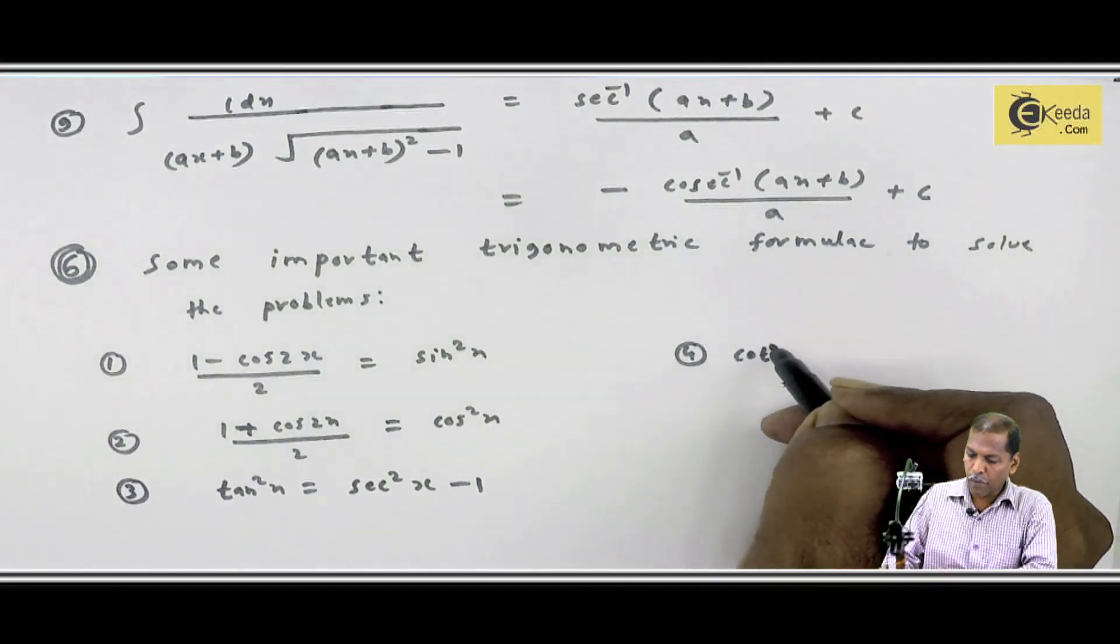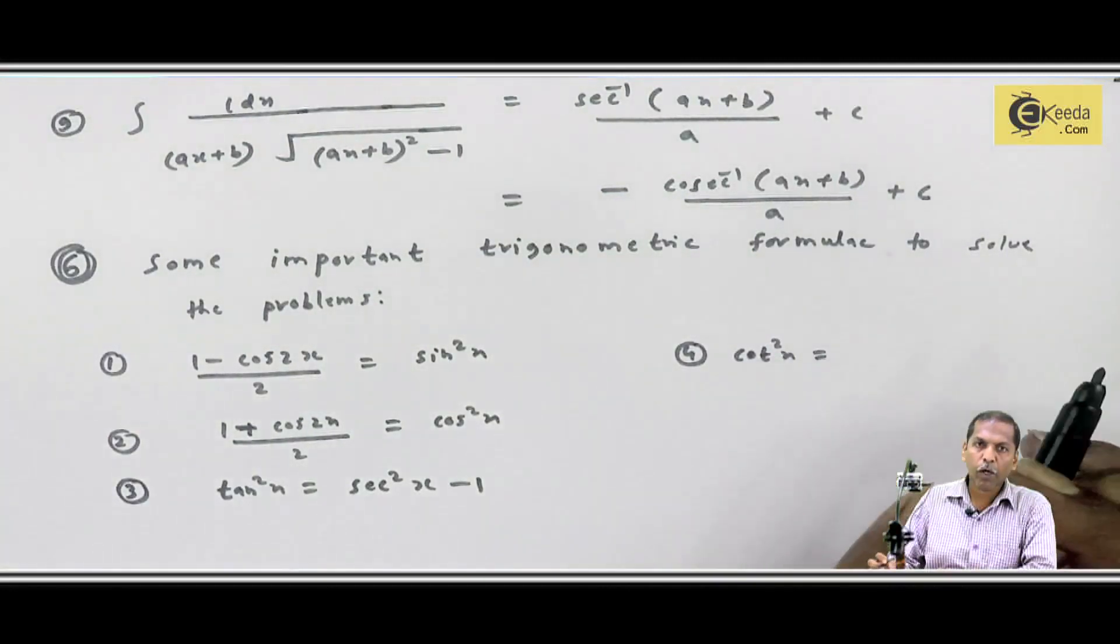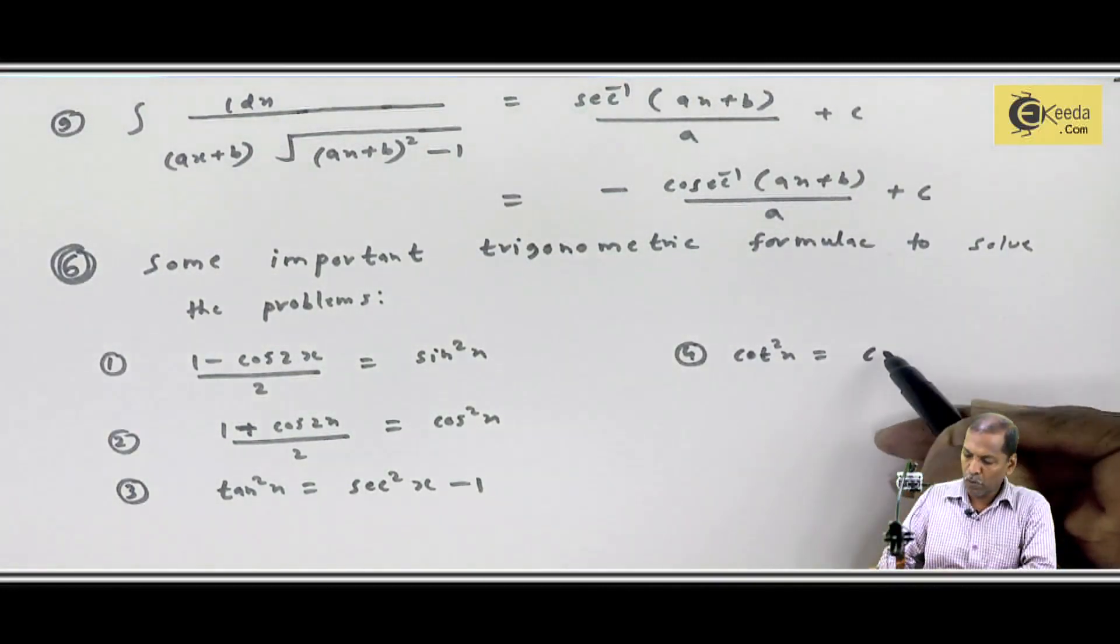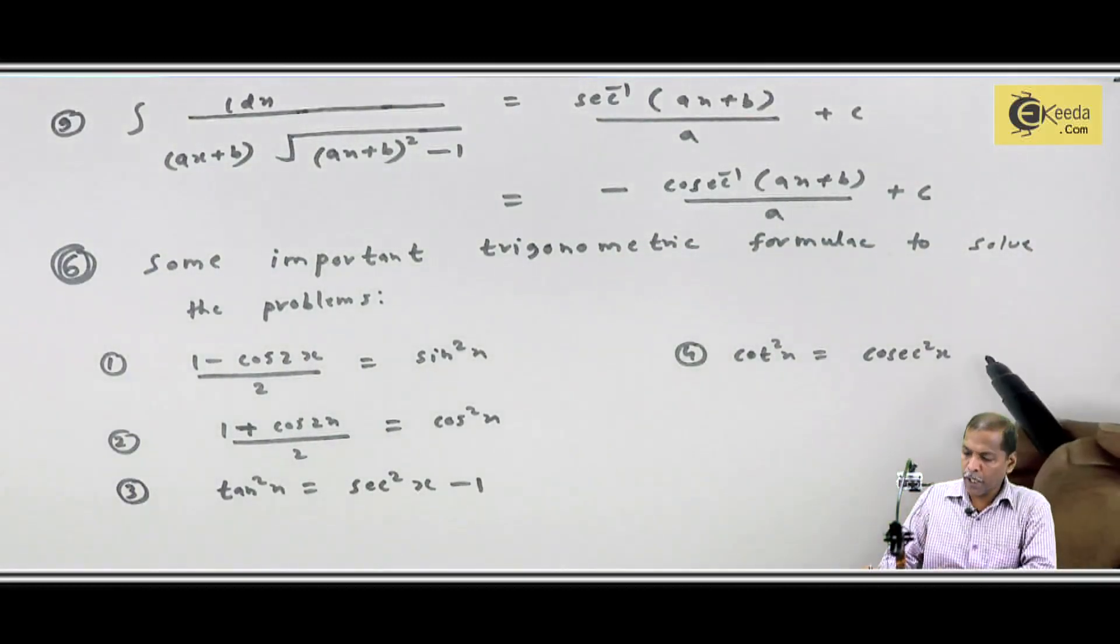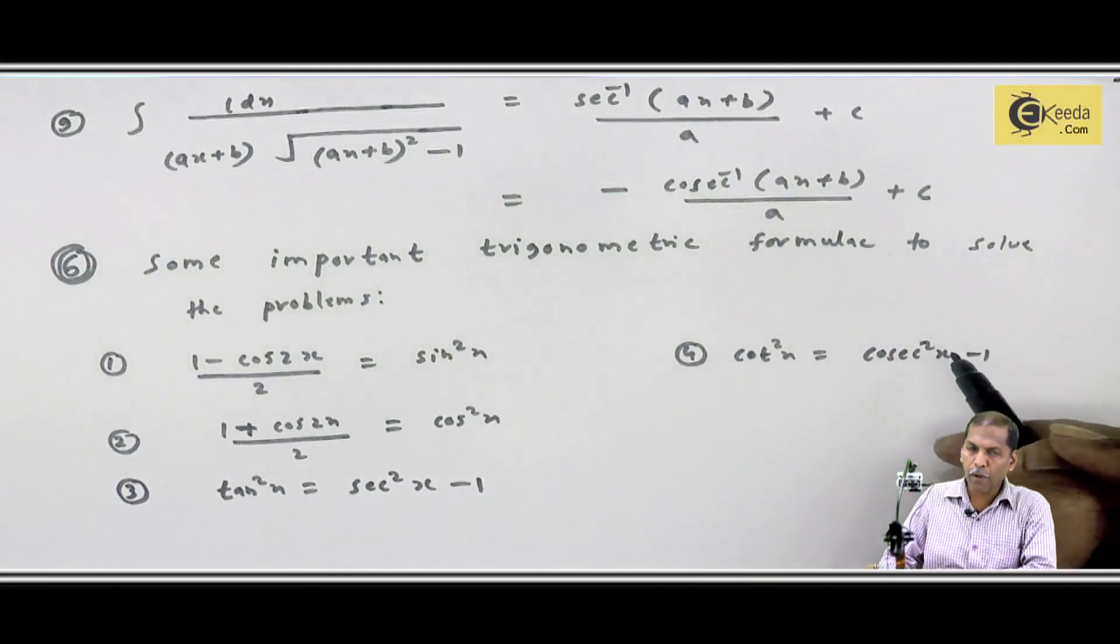Therefore, cot²x equals cosec²x minus 1.